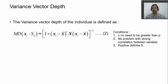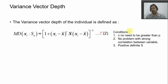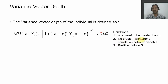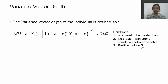Our team has introduced the variance factor depth, defined by equation number two. Our proposal has weaker conditions. First, sample size does not need to be greater than p, the dimension. Second, we have no problem with strong correlation between variables. Third, the covariance matrix S should still be positive definite.